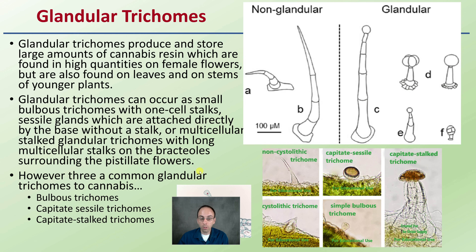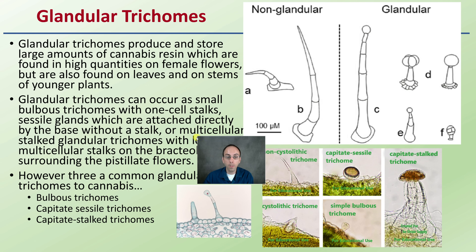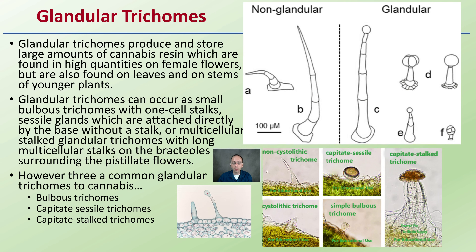Now we have the glandular trichomes, and there are a whole bunch of different types. Glandular trichomes produce and store large amounts of cannabis resin. They are found in high quantities in female flowers but are also found in leaves and on the stems of particularly younger plants.